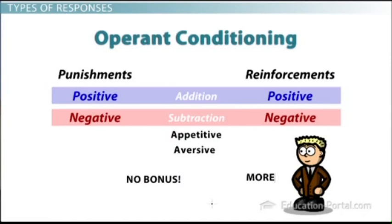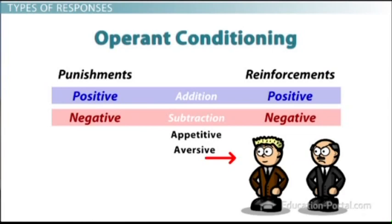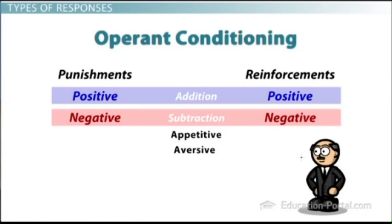A positive reinforcement is the addition of something good — maybe you get more money. A negative reinforcement is the taking away of something bad — say you really don't like someone sitting next to you, and they're moved away. They're taken away, and that's a negative reinforcement. The terms are counterintuitive, but if you break it down as adding or removing something good or bad, it gets easier to understand.